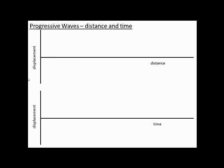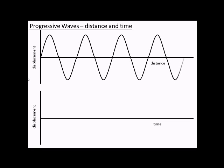So a progressive wave, then. These are the ones that transfer energy from a point to another point. But they don't transfer particles. So if we look at an example of this on two different axes, you'll notice one is distance, and one is time.